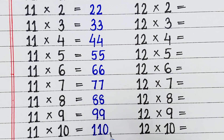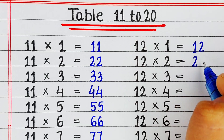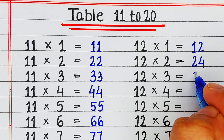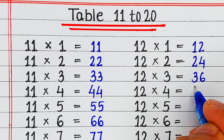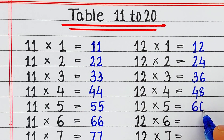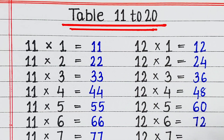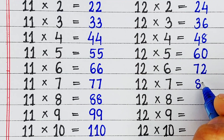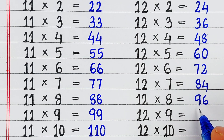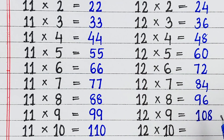Next is table of 12. 12 1s are 12, 12 2s are 24, 12 3s are 36, 12 4s are 48, 12 5s are 60, 12 6s are 72, 12 7s are 84, 12 8s are 96, 12 9s are 108, 12 10s are 120.